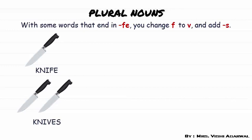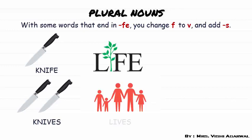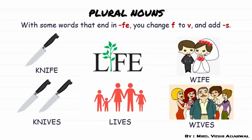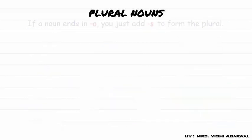For example: knife becomes knives, life becomes lives, wife becomes wives. But the word giraffe is an exception. Why? Because it is ending with FE, but to make it plural we only add S, so its plural is giraffes.